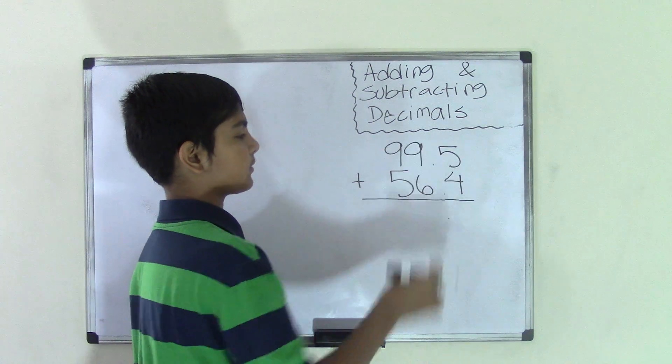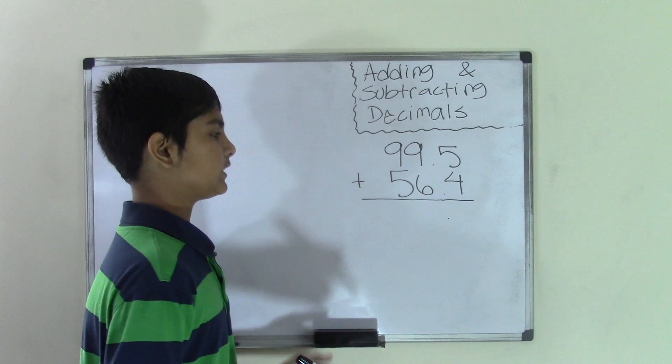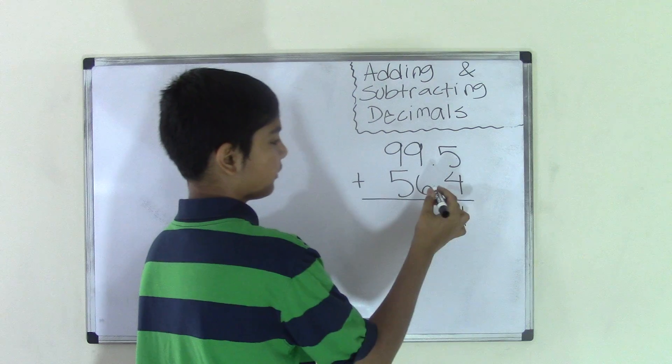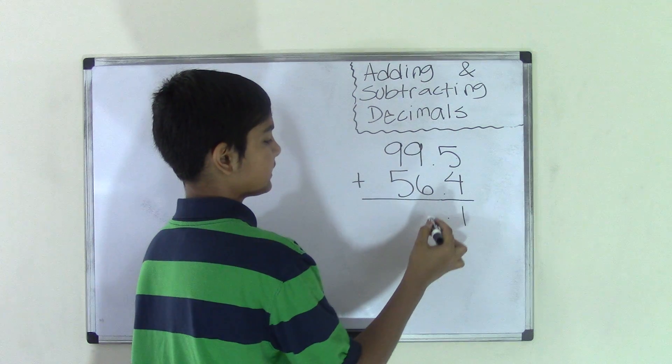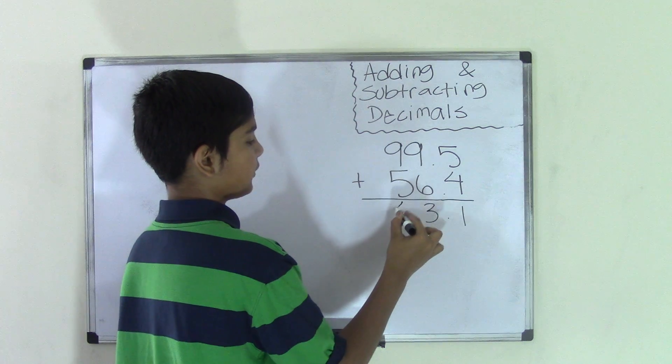So this is kind of like the same thing like when you add. Instead, you have to subtract once your decimal point is brought down. So now we simply subtract. So 5 minus 4 is 1. 9 minus 6 is 3 and 9 minus 5 is 4.